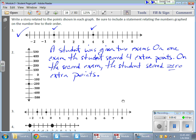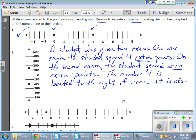Now zero is all by itself. That's not positive or negative. So that's going to stay all by itself. But the extra points, the fact that I wrote the word extra, lets me know that that is a positive value. Now it says, be sure to include a statement relating to the numbers graphed on the number line to their order. So the number four is located to the right of zero. It is also a greater value.